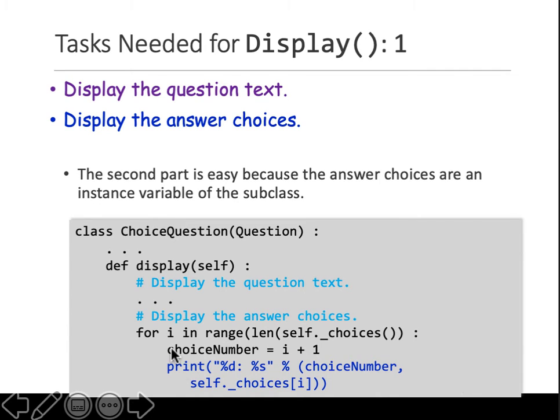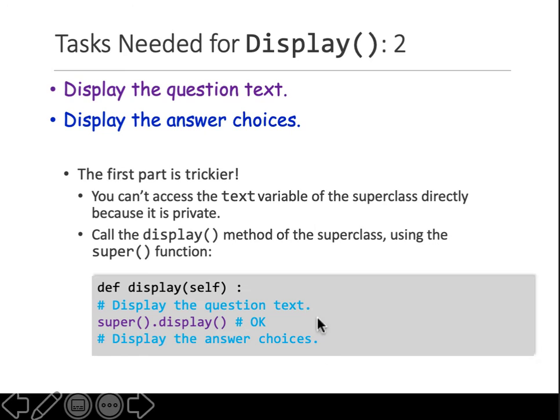We have written a for loop in the range till the length of the choices list. There can be four choices, five choices, whatever. Increase the choice number by one, print it, and print that choice from the choices list. That's it - display the answer choices.